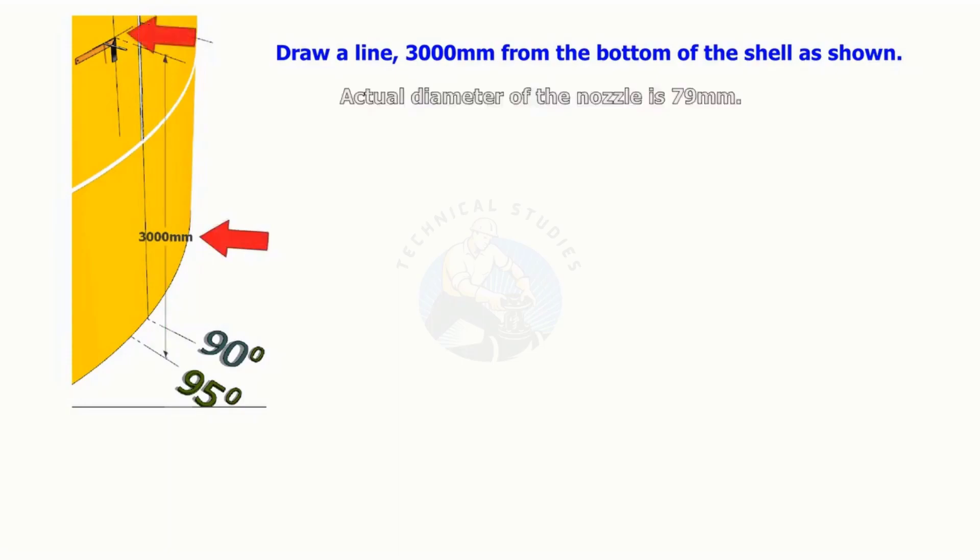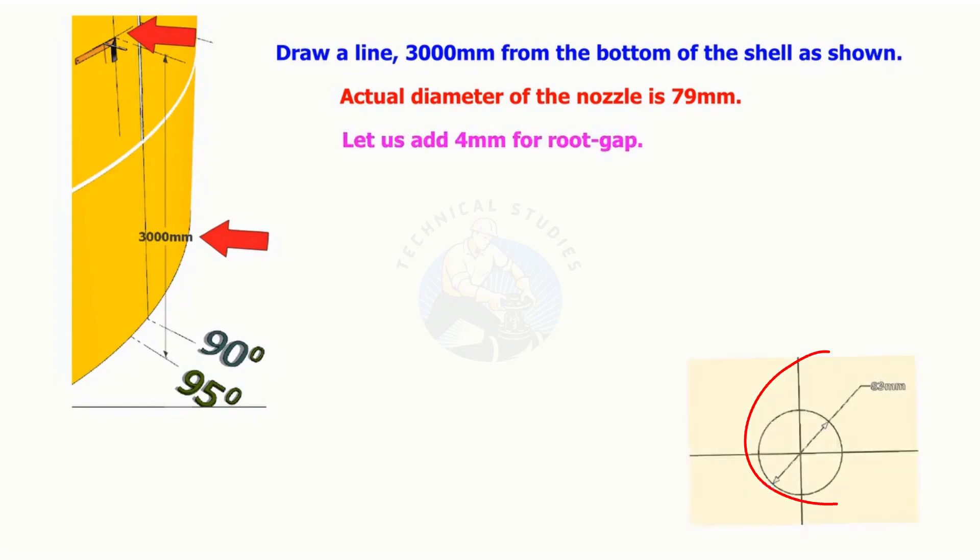The diameter of the nozzle is 79 millimeters. Add 4 millimeters extra to this for root gap.